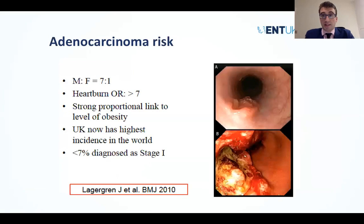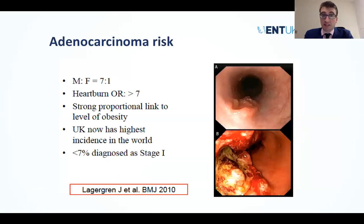Adenocarcinoma of the esophagus has a male preponderance and is strongly linked to obesity. With the ongoing pandemic of obesity, incidence is rising. A BMJ paper from ten years ago showed the UK has the highest incidence in the world. It very rarely presents early — it usually presents late with absolute dysphagia and other symptoms due to local or distant spread of disease, owing to the poor ability to localize where the initial symptoms stem from.